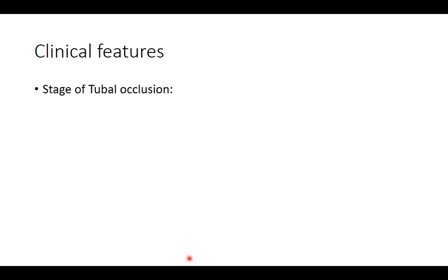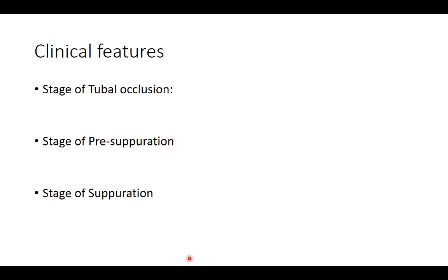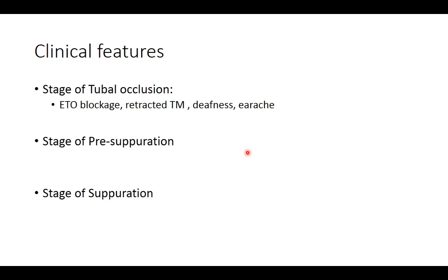The clinical features of ASOM are important for exams. There are four stages: stage of tubal occlusion, stage of pre-suppuration, stage of suppuration, and stage of resolution or complication. In the stage of tubal occlusion, there is blockage of the Eustachian tube, creating negative pressure inside the middle ear cavity, causing retraction of the tympanic membrane leading to conductive hearing loss and ear pain.